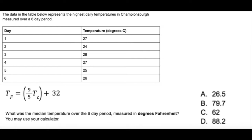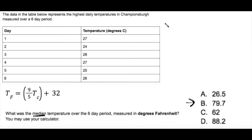The data in the table represents the highest daily temperatures in Championsburg measured over a six-day period — days one through six with temperatures in degrees Celsius. The question asks: what was the median temperature over the six-day period measured in degrees Fahrenheit? You may use your calculator. Note that degrees Fahrenheit is bolded. The median is the middle number once you've put all the numbers in order from smallest to largest.